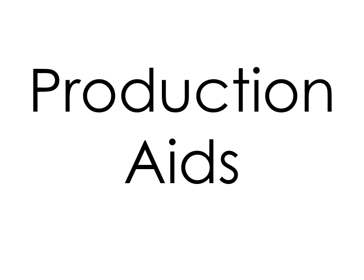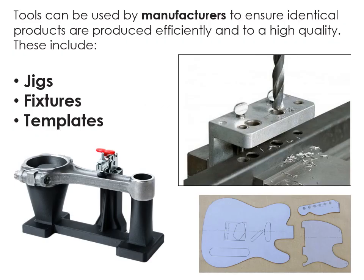This video is an A-level revision video covering production aids and how they are used in manufacturing. We'll be covering the main three that you need to know for the AQA spec. Production aids are tools that are used by manufacturers to ensure that their products are identical. They also help with efficiency and the quality of the final product.